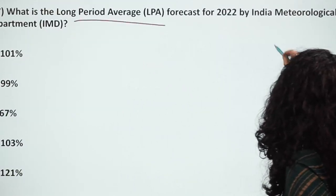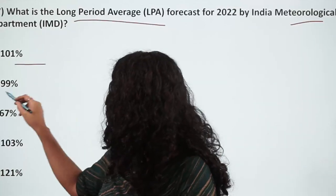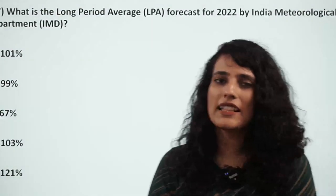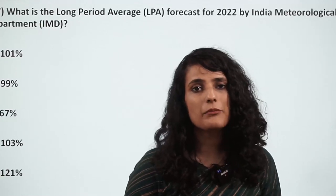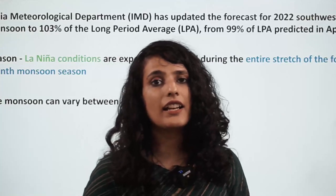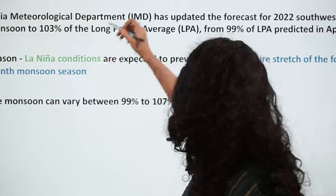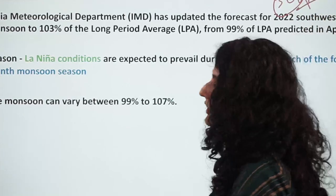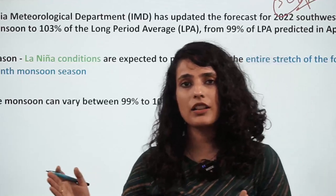What is the long period average forecast by the Indian Meteorological Department? IMD considers a period of at least 30 years — 30 years of average rainfall is considered to calculate LPA. Region-wise and climate-wise bhi IMD announces its LPA. This year's finding: 103% of the LPA is predicted during the 2022 southwest monsoon, up from 99% of the LPA predicted in April.